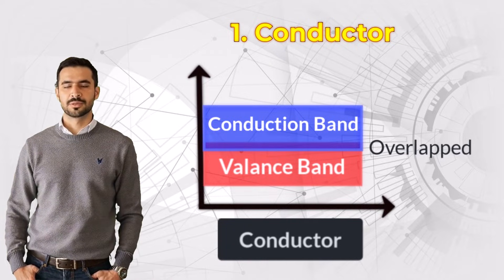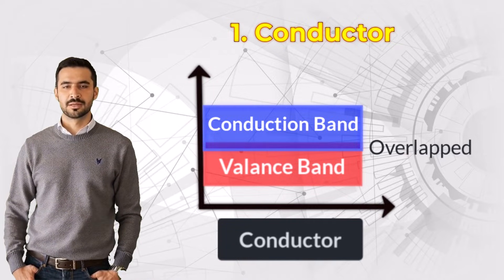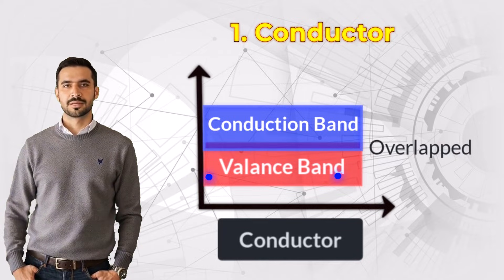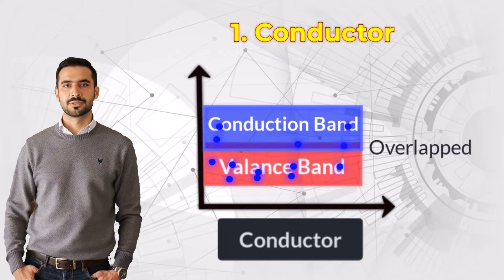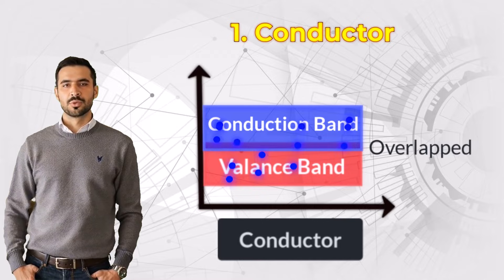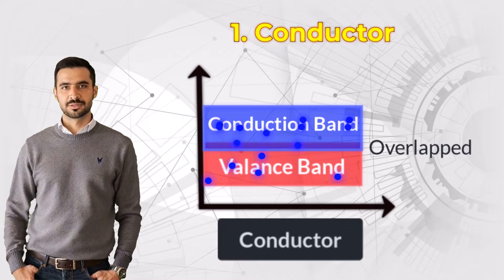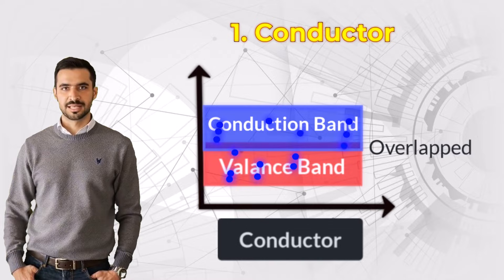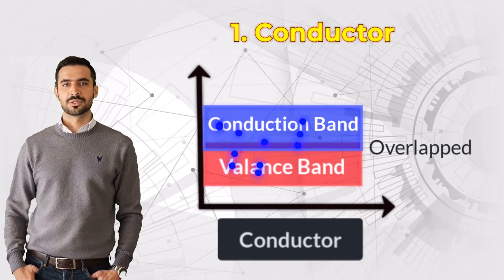In conductors, the energy gap between the valence band, where electrons are initially bound, and the conduction band, where they move freely, is extremely small or non-existent. This makes it easy for electrons to jump into the conduction band and carry energy.